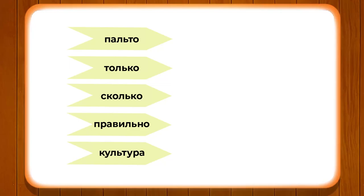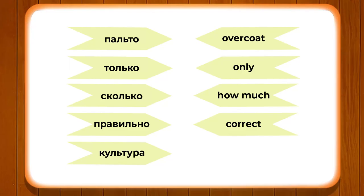Now let's look at new Russian words: PALTO, TOLKO, SKOLKO, PRAVILNO, KULTURA. PALTO means overcoat and ends with O. All these words except KULTURA end with O, so you can use a neuter gender adjective with PALTO — for example BOLSHOE PALTO meaning big overcoat. TOLKO means only, SKOLKO means how much, PRAVILNO means correct, and KULTURA means culture.